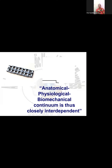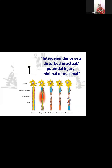There is an anatomical, physiological, and biomechanical continuum: if anatomy is affected, it will affect physiology, and that will be reflected as biomechanical abnormality — they are very closely interdependent. Treat one and the other will also improve. This interdependence is disturbed in any injury, whether actual or potential, minimal or maximal. Examination is indicated because activity cannot be the same between two individuals — activity-specific interdependence creates that anatomical, physiological, and biomechanical continuum.